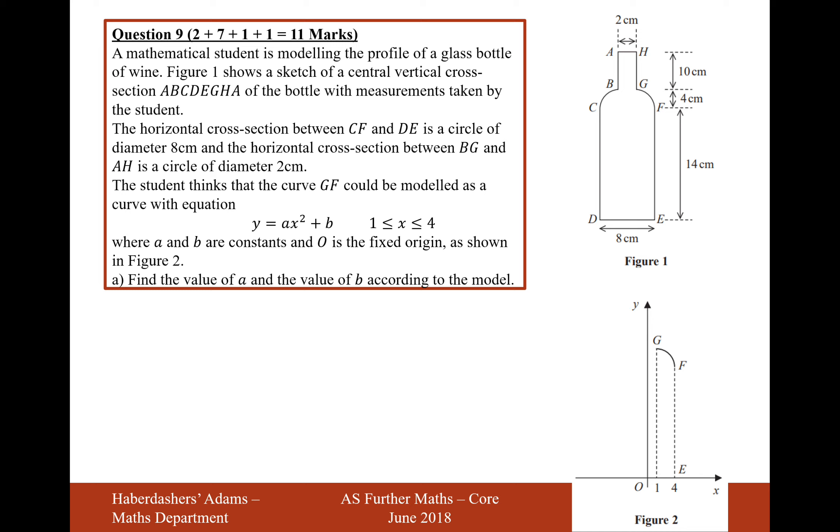H is a circle of diameter 2 centimetres. The student thinks that the curve G, F can be modelled as the curve with equation Y equals AX squared plus B, where X is in between 1 and 4, where A and B are constants and O is a fixed origin, as shown in figure 2. Find the values of A and B corresponding to the model.